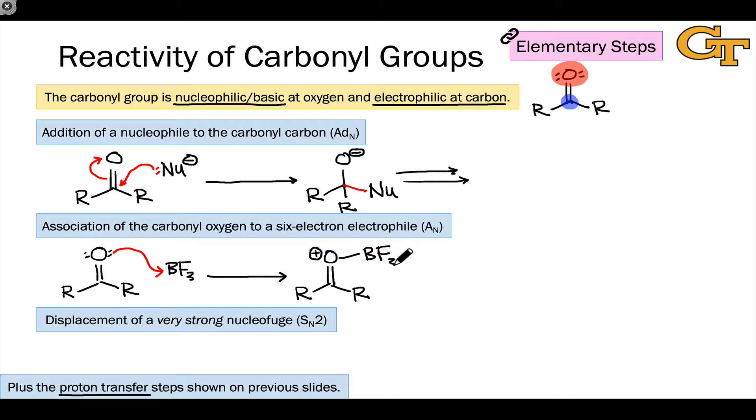The charge of the carbonyl oxygen has increased by one unit since one of its lone pairs is now involved in a bond to the Lewis acid, and the charge on the Lewis acidic atom, boron in this particular example, decreases by one unit. So here the boron becomes negatively charged.